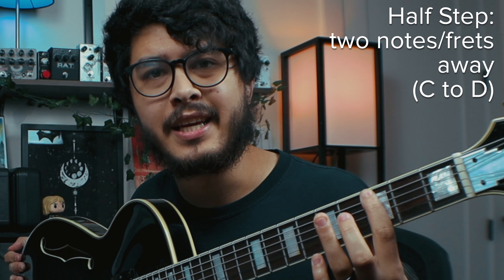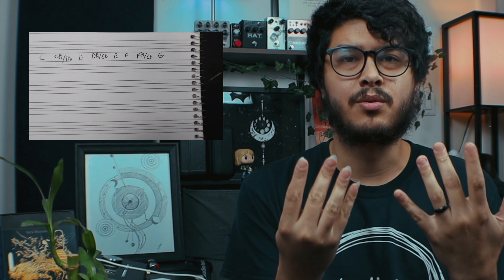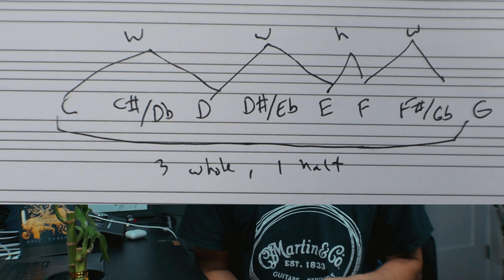Today we're going to be going over what intervals are. Intervals may seem like a super intellectual music school thing, but actually they're really simple. All an interval is is the distance between two notes. A half step is one note away — for example, C to C sharp, which is one fret away on the neck. A whole step is two frets away — for example, C to D, going from the third fret to the fifth fret.